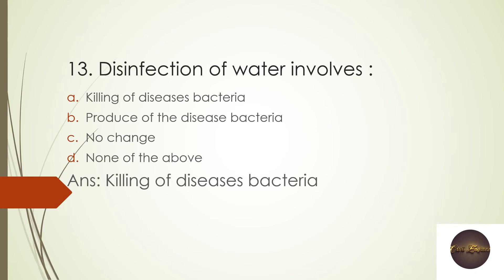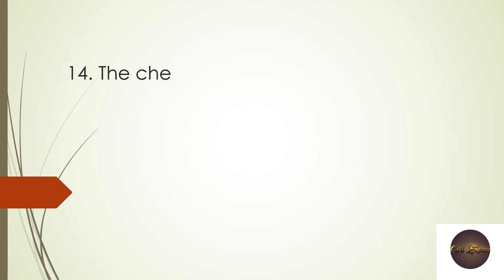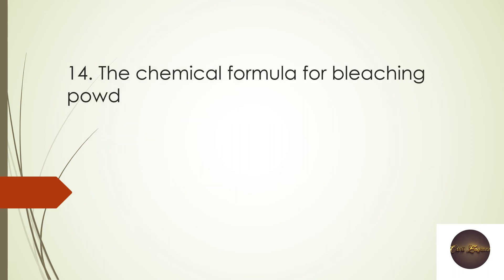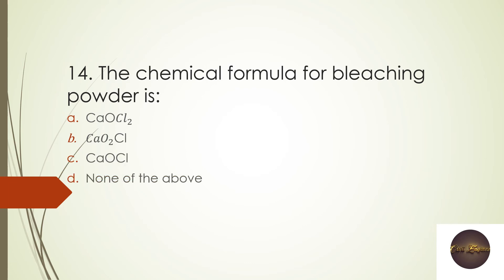Next question: The chemical formula of bleaching powder — options: CaOCl₂, CaOCl₂, CaOCl, none of the above. The chemical formula of bleaching powder is CaOCl₂. Bleaching powder is used as a disinfectant in water supply systems to make water potable.